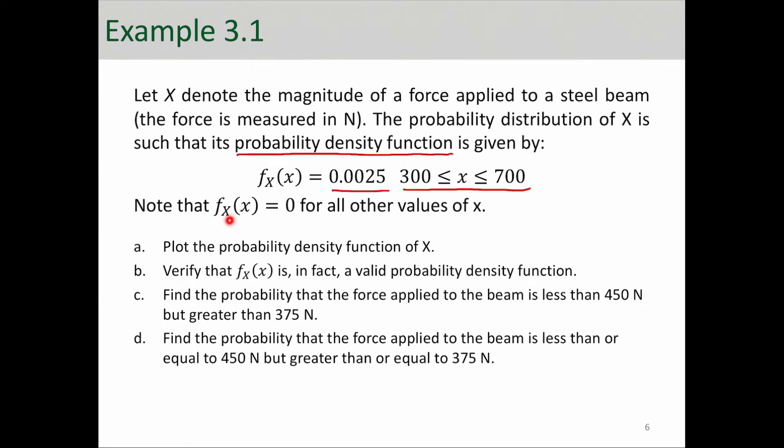Note that this PDF function is equal to 0 for all other values of X. Meaning that for X values greater than 700 and less than 300, the PDF is equal to 0. Probability is equal to 0.